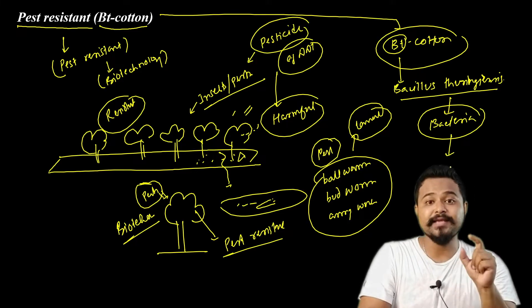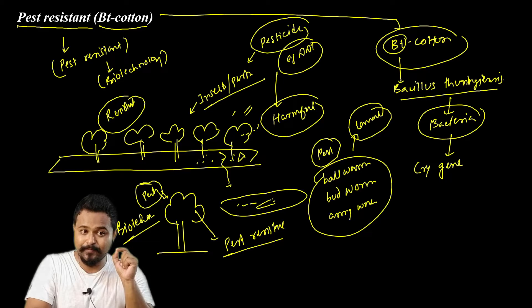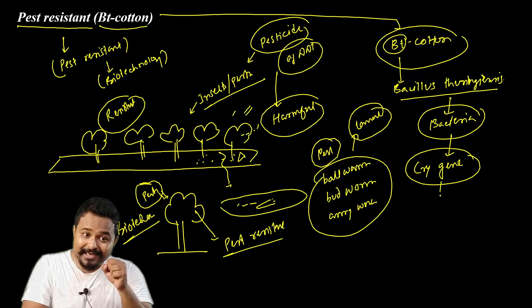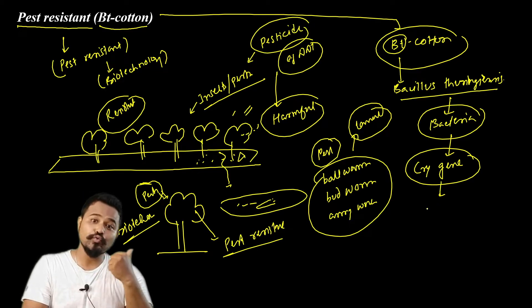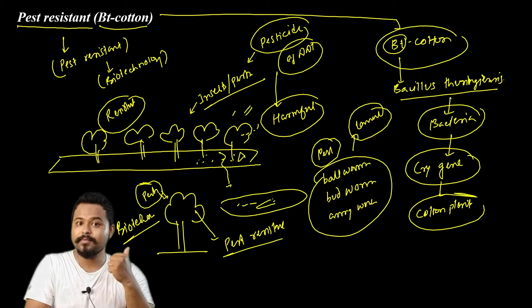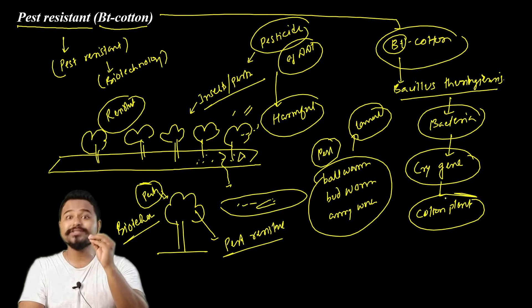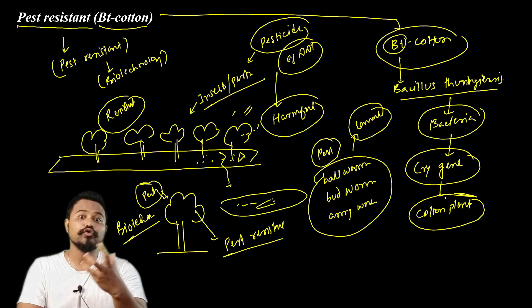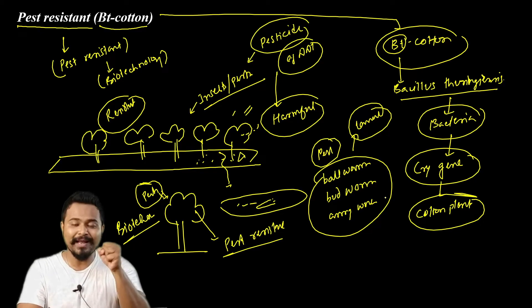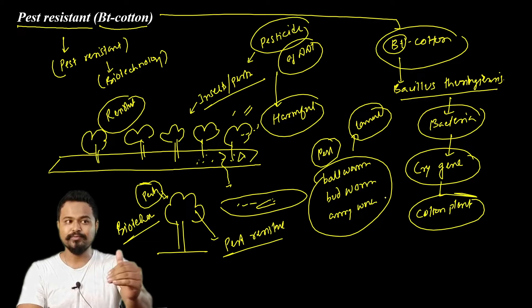From this bacterium, an important gene is extracted — this gene is named the cry gene. This cry gene from Bacillus thuringiensis is inserted into the cotton plant. Once inserted, this cry gene produces an important toxin called cry protein. When pests eat the plant, the cry protein causes the pests to die.